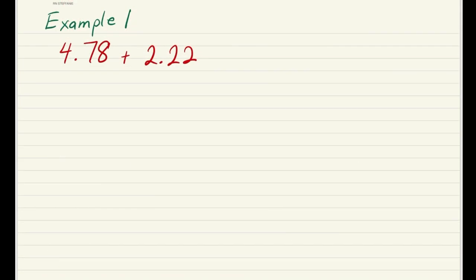For the first example, we have 4.78 plus 2.22. So what I'm going to do is rewrite the question and align them so it's easier for me to add. So we have 4.78 plus 2.22. So 8 plus 2 is 10. We're going to put a 0 down here and then carry the 1 up here.